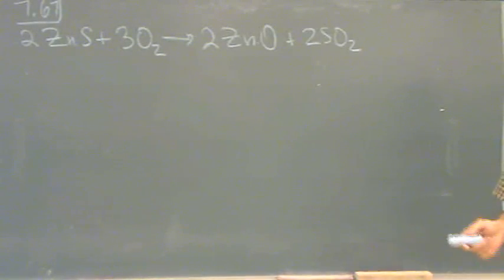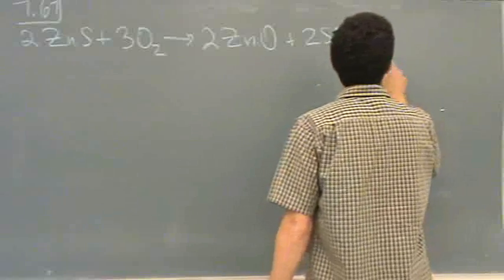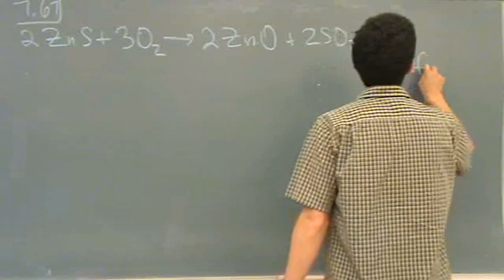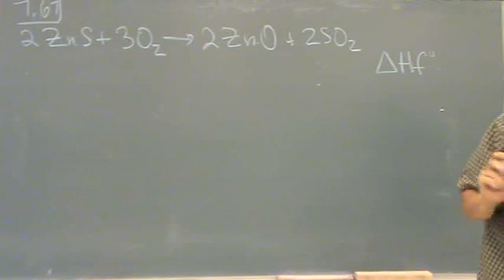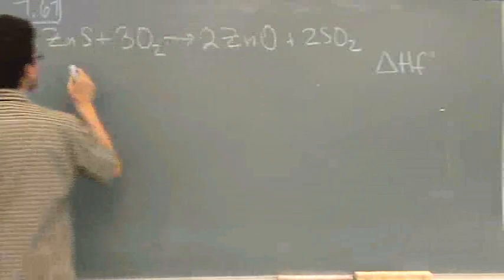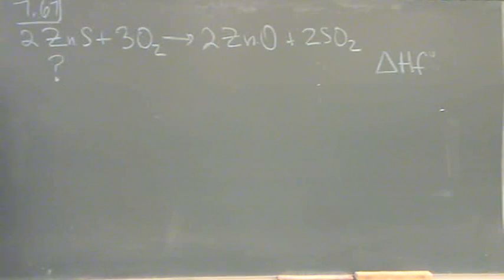The delta H of formations are different depending on its state. So what you would just do is look up the delta H of formation values in the back. And the one they want to know is zinc sulfide. So this is question mark. That's the one you want to know.